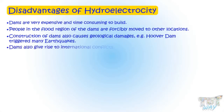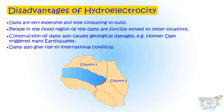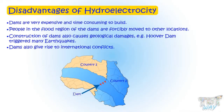Dams also cause international conflicts. If a dam is built on a river that passes through more than one country, the country that builds the dam gets control of the flow of the river, and the other country has no control over it — it can be flooded if the other country opens the gates of the dam.